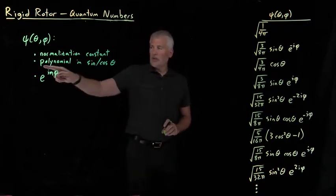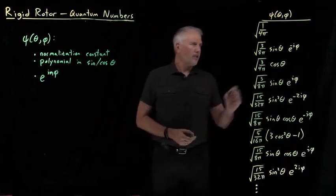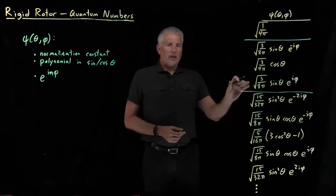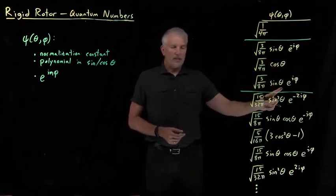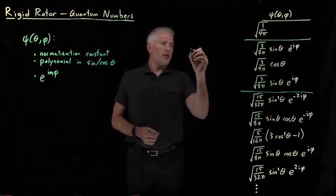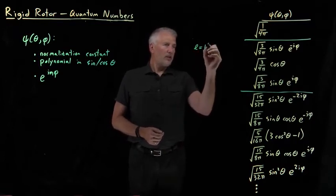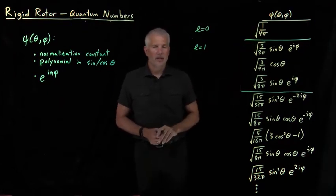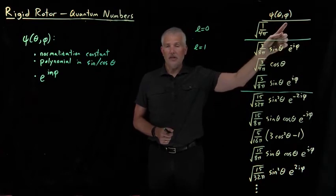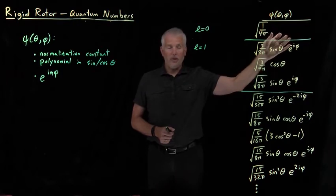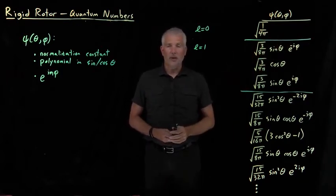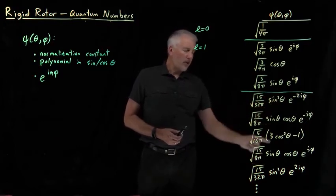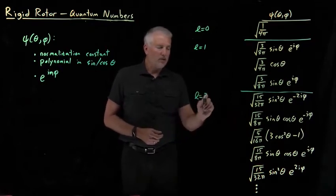Looking more closely at the polynomial dependence on theta in sines and cosines: dividing the list, we can see some terms are linear — either a sine or a cosine, just one trigonometric function of theta. I'll call those the L equals 1 functions. There's also one simple constant wave function with no dependence on theta — a zeroth-order polynomial — and that's the L equals 0 function. Below that, I've got the quadratic functions — either sine squared, cosine squared, or sine times cosine — two powers of sine and cosine. Those I'll call the L equals 2 functions.